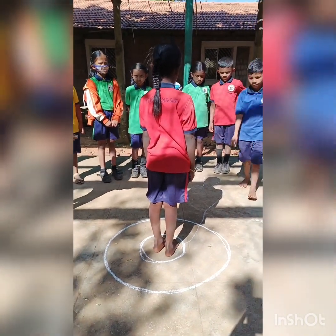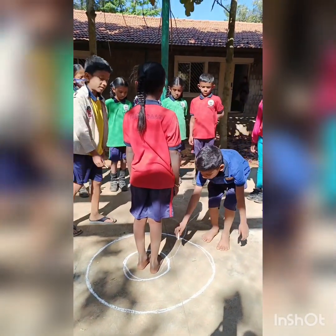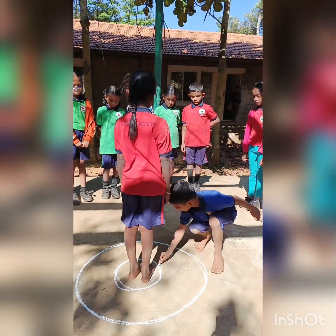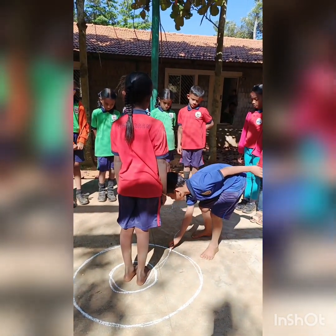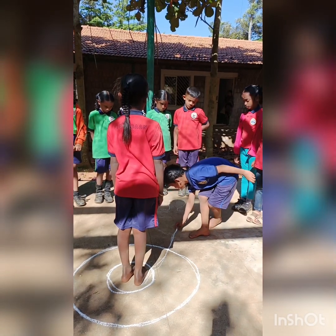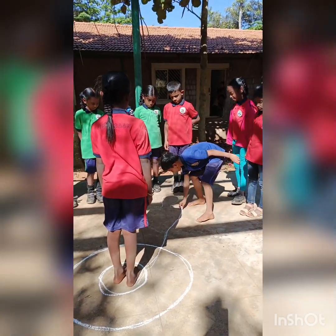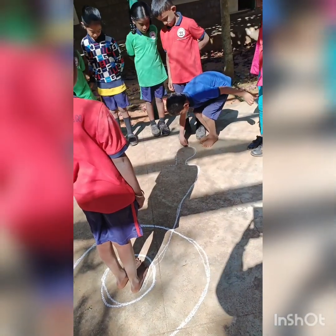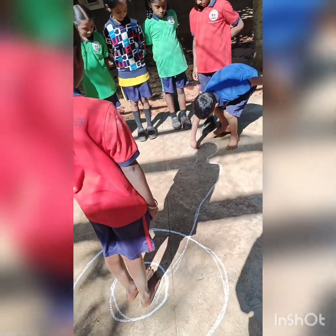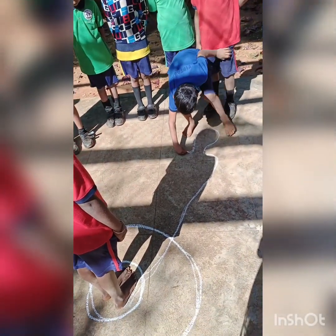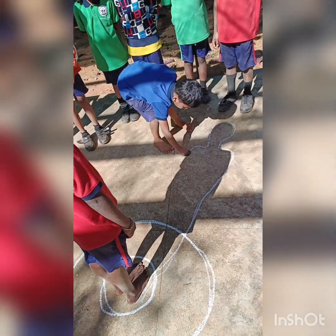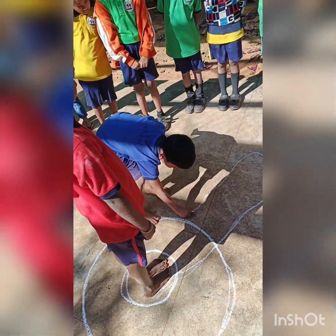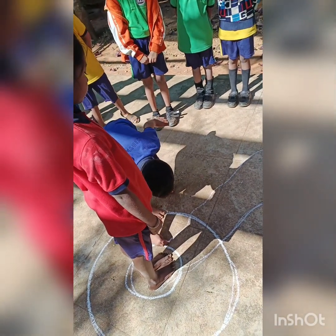Minaya, take the chalk from him and write the outer line of the shadow — where it is falling. Good.